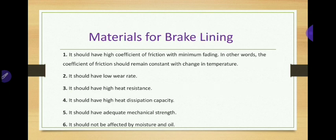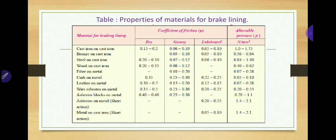Next, the materials for brake lining. We can study a table of various abrasive materials which can be used over the facing or lining of the brake, and their properties are shown in the table. These include cast iron, bronze, steel, wood, fiber, cork, leather, wire, asbestos, asbestos blocks, and metals or cast iron. These materials have a high coefficient of friction and can retard or stop rotating parts easily.